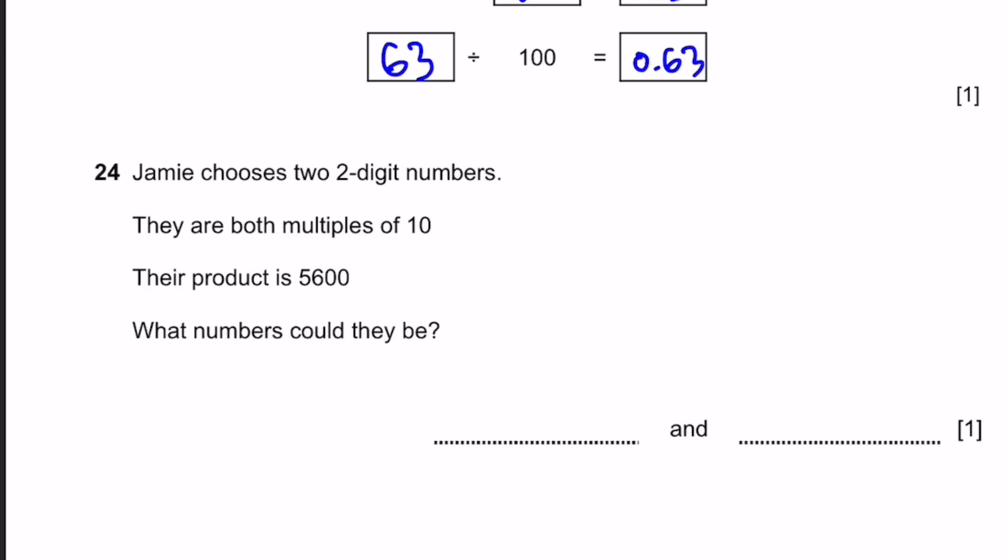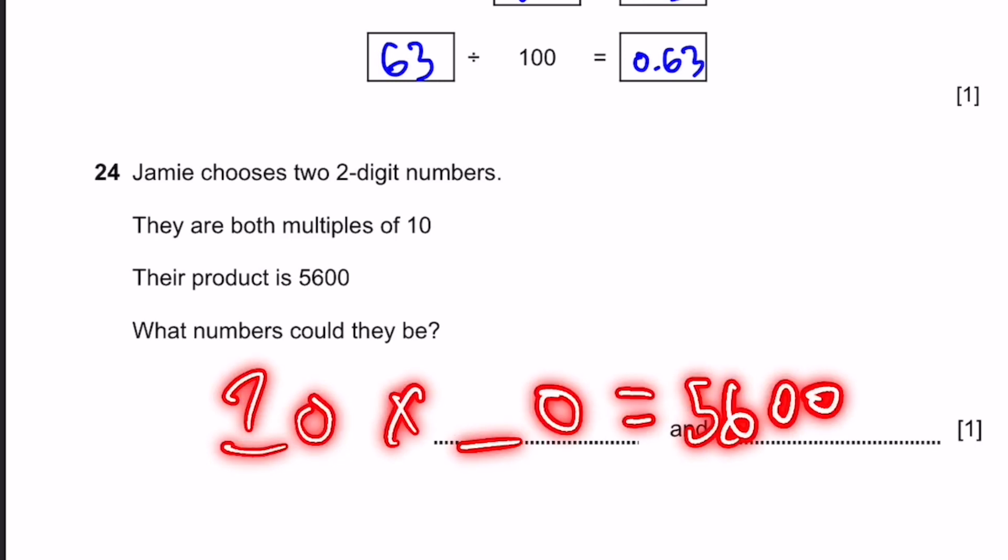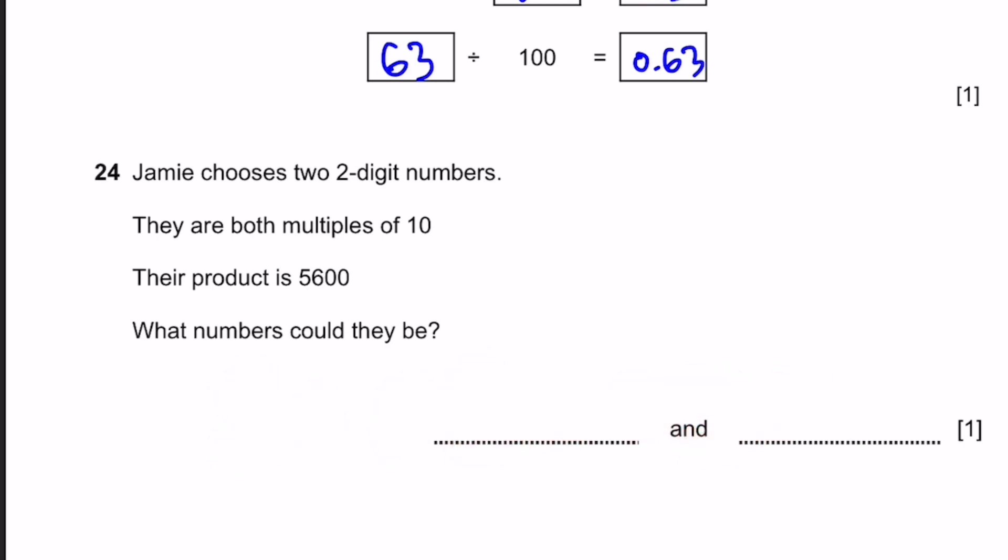Question 24. Jamie chooses two two-digit numbers. If they're both multiples of 10, the product is 5,600. What numbers could they be? It'll be blank 0 multiplied by blank 0 equals 5,600. It can be 70 times 80. Actually, that's the only two numbers which are possible. 70 and 80, because they are two-digit numbers which are multiples of 10.